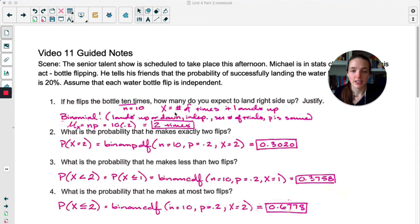So we're going to have X be the number of times that it lands up. I like to define X once I've identified something as binomial just to clarify any future questions. So the expected number of times for it to land up, that's the same thing as the mean. And since it's binomial, we can do N times P and get two times. So once again, I don't think he should be doing this for the talent show if he's only going to land it twice out of 10 times.